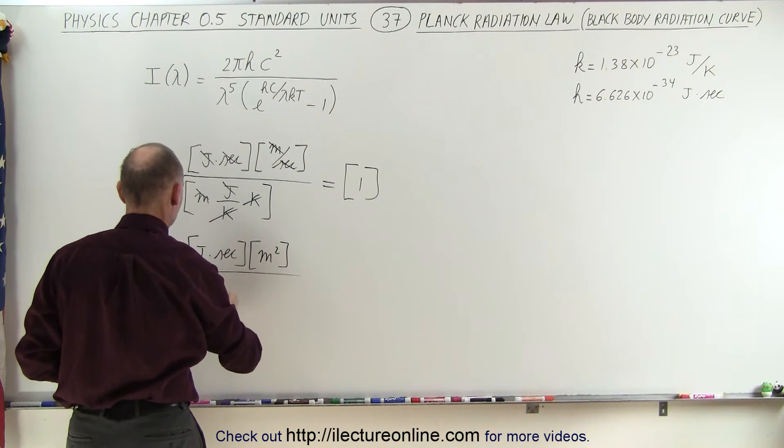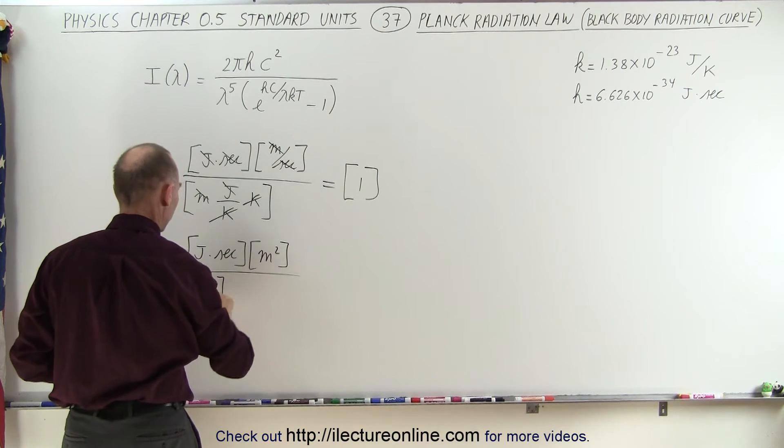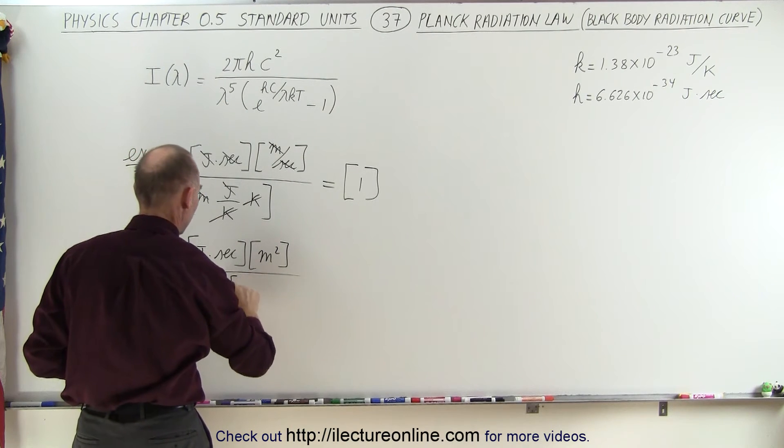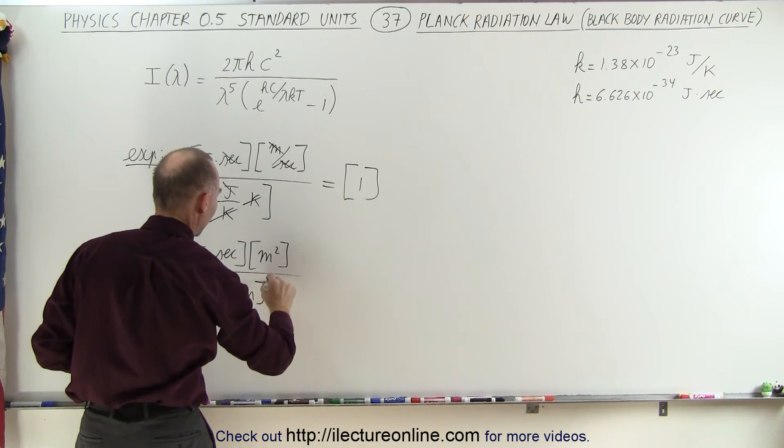which would be meters squared per second squared. So, let's put second squared in the denominator. So, it would be meters squared per second squared for C squared. And then we have wavelength to the fifth power. That would be meters to the fifth power.